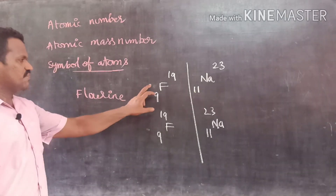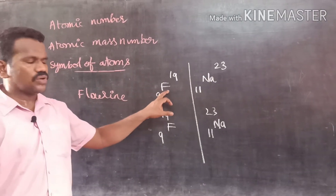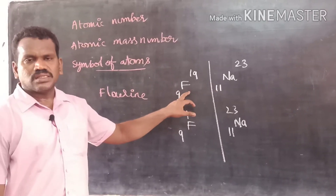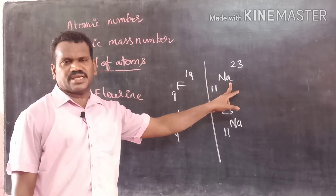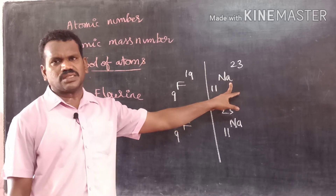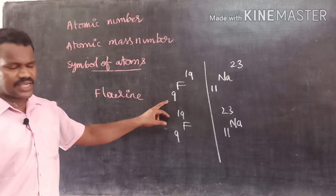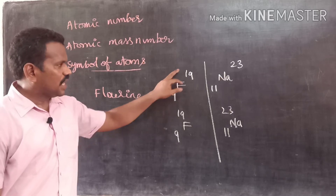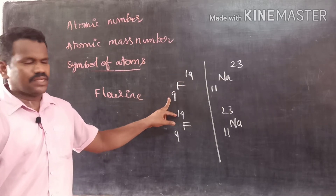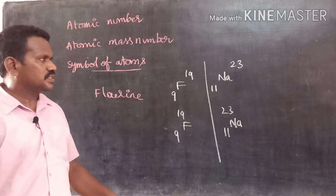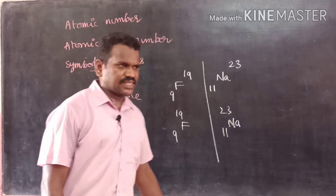Here, F indicates the symbol of the atom, meaning we are describing Fluorine. Na represents sodium. We can observe subscript and superscript: for Fluorine, subscript is 9 and superscript is 19. For sodium, subscript is 11 and superscript is 23.